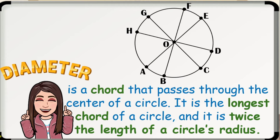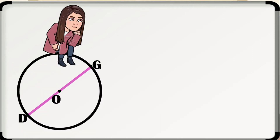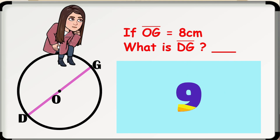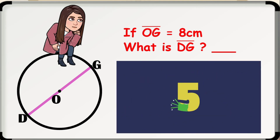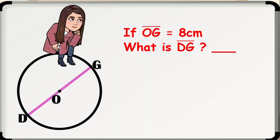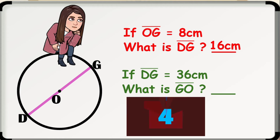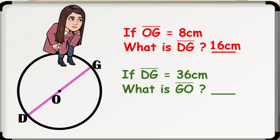Now, will you name all the diameters in the given circle? Before we proceed, let's have some practice. Remember that the diameter is twice the length of a circle's radius. If line segment OG is 8 centimeters, what is line segment DG? You have 10 seconds to answer. Correct, it is 16 centimeters. Next, if line segment DG is 36 centimeters, what is line segment GO? You have 10 seconds to answer. Very good, it is 18 centimeters.